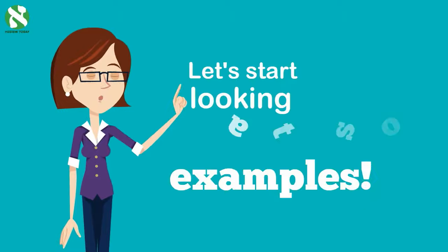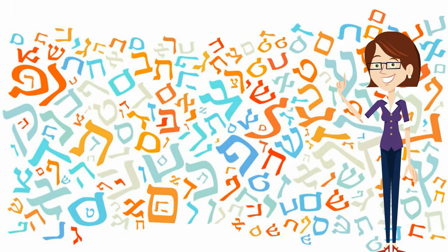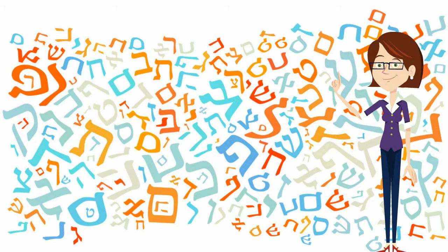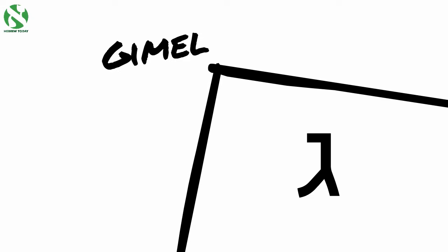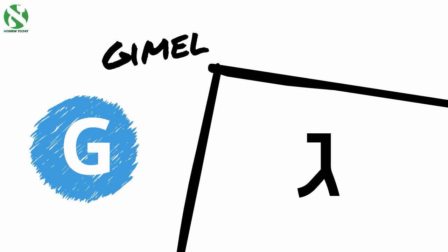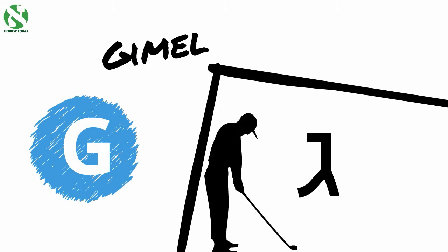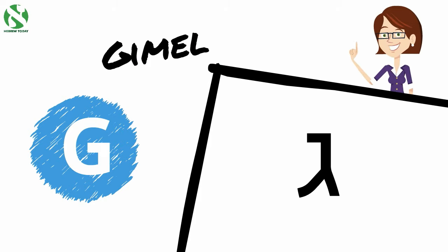Let's start looking at some examples. A Nikud symbol never appears on its own. It is always connected to a letter. After all, it takes two to tango. Let's take a Hebrew letter to work with as an example to learn the different types of Nikud. Remember this letter? It's the letter Gimel. It sounds like the letter G in the word gold. Now let's see how the different Nikud symbols affect the letter Gimel.